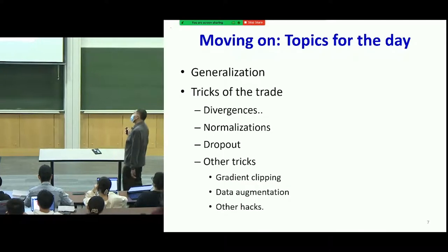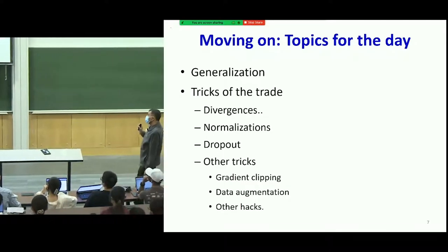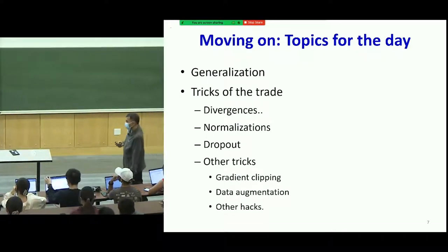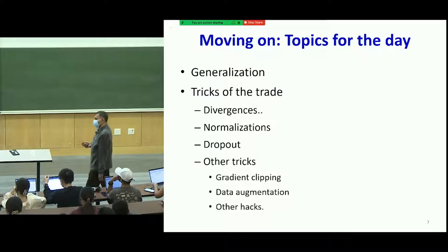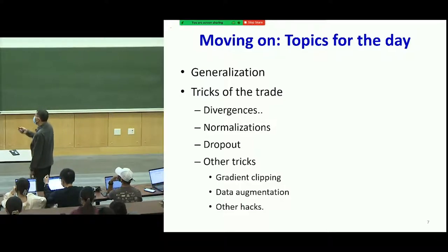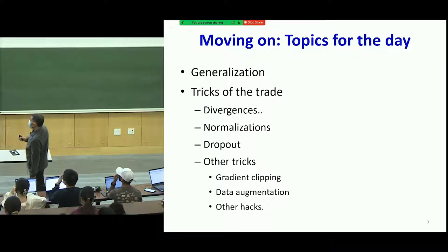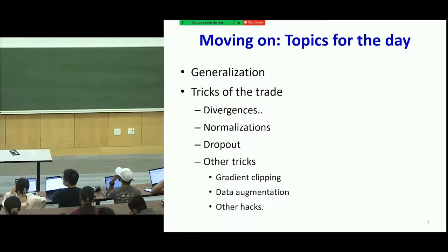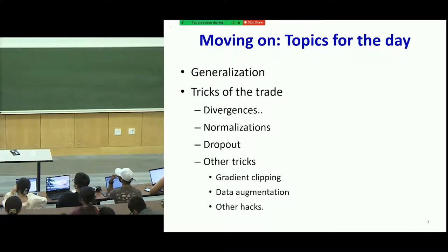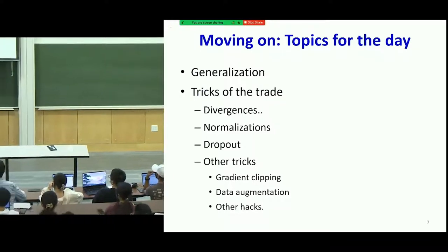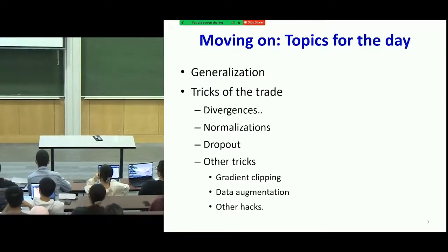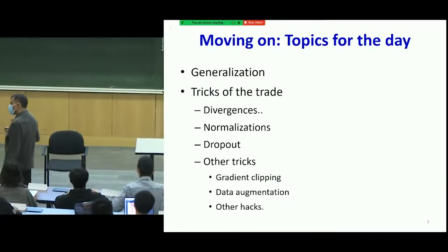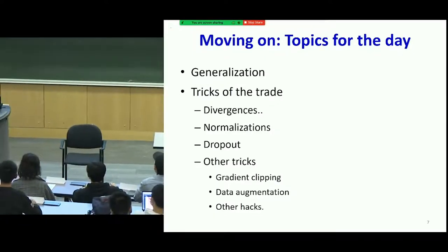Today we're going to move on and look at a mix of topics to close out the series on training neural networks. We're going to look at divergences, normalizations, and various ways of trying to make the model generalize, and a few other tricks if time permits. Even if I don't present something in class, it's likely to turn up in the quiz.